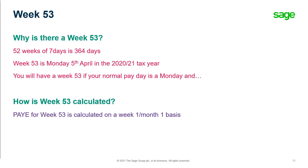How is week 53 calculated? PAYE for week 53 is calculated on a week 1, month 1 basis, so it is non-cumulative. This means year-to-date figures are not included and the tax figure is worked out in isolation. If this results in the employee underpaying tax, HMRC will issue a P800 to correct the amounts. National Insurance is calculated using the normal thresholds for the applicable pay frequency.